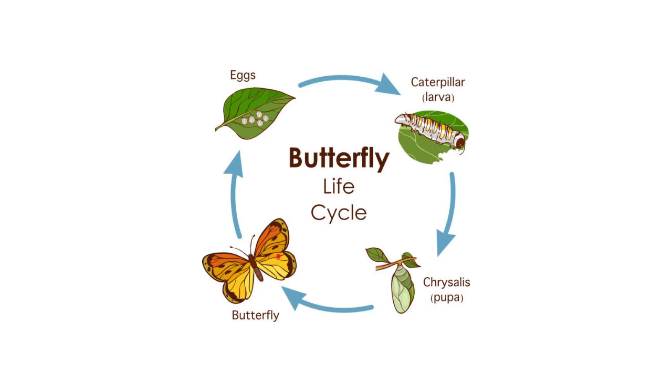Again, this is the butterfly life cycle. As you can see, we start with the eggs. The eggs turn into a caterpillar. The caterpillar becomes a chrysalis. Then the chrysalis becomes a colorful butterfly.